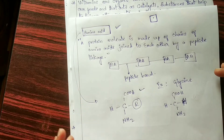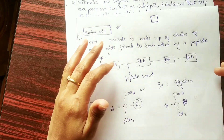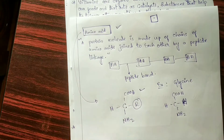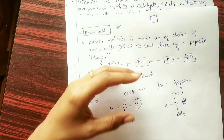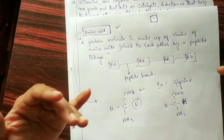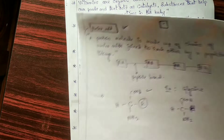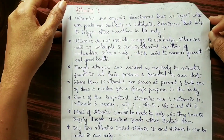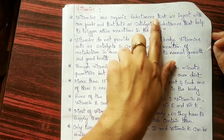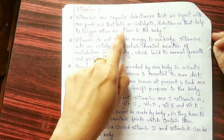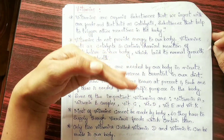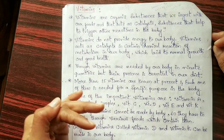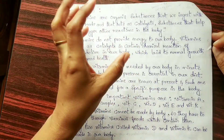That covers the basics of proteins. Now we will move on to the next component of food, which is vitamins. Vitamins are organic substances that we ingest with our food and that act as a catalyst — a catalyst is something that enhances a reaction, giving a push so that a chemical reaction can occur. Vitamins help trigger other reactions in our body.